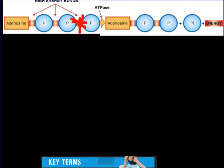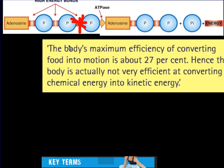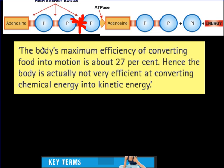I'd like to think of the body as being fairly efficient, but when we look at the following, the body's maximum efficiency of converting food into motion is actually only about 27 percent. It's not very efficient at all at converting this chemical energy into kinetic energy.